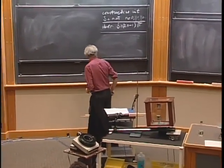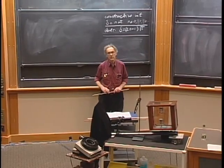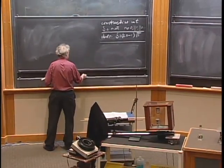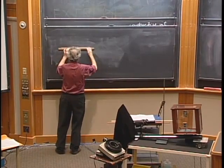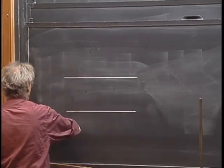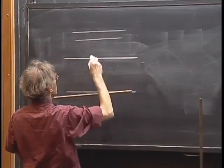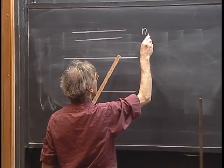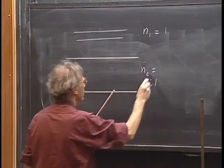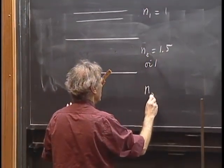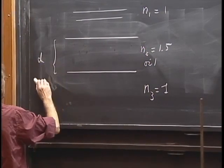Now I will continue with interference, which has very far-reaching consequences, turning to what we call thin film interference under normal incidence. I have here a thin film of oil. So this is air — N₁ ≈ 1. This is N₂ for oil, about 1.5. And this is N₃, which is again air, so about 1. Let the thickness of the oil be D; call the upper surface A and the lower surface B.